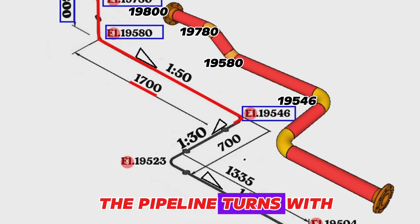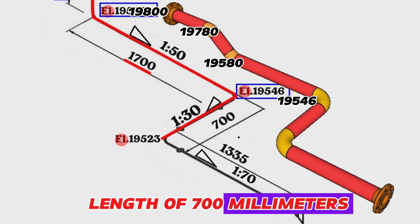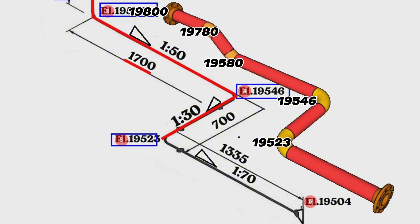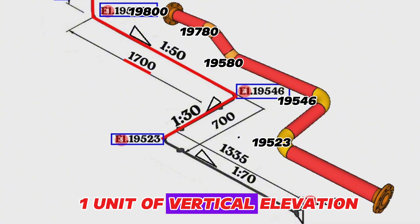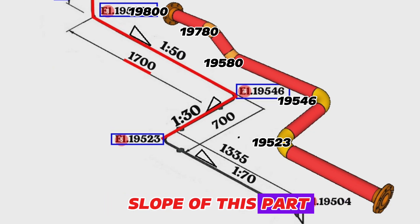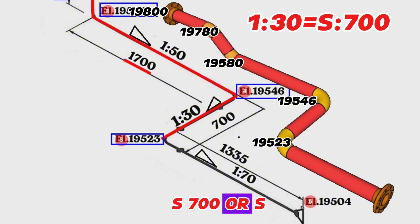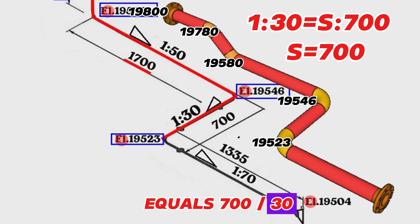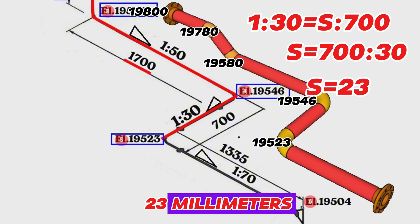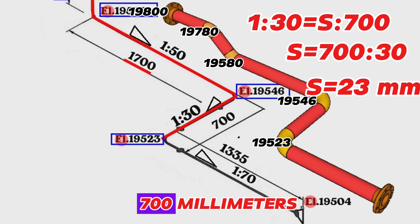At this point the pipeline turns with a 90-degree elbow to the west direction and travels for a length of 700 millimeters. The slope symbol ratio in this part of the pipeline is 1:30, meaning that for every 1 unit of vertical elevation there are 30 units of horizontal distance. We calculate: 1:30 = S/700, so S = 700 ÷ 30 ≈ 23 millimeters. This means the height of the pipeline drops by 23 millimeters over a distance of 700 millimeters.